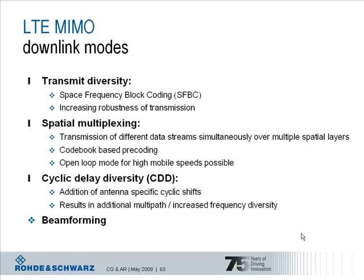Achieving the high data rates in LTE is possible by using the spatial multiplexing MIMO mode. This allows transmission of different data streams simultaneously over multiple spatial layers. And to further improve the performance of this MIMO mode, a so-called codebook based precoding approach is applied. That means the signal is precoded before transmission in an appropriate way.